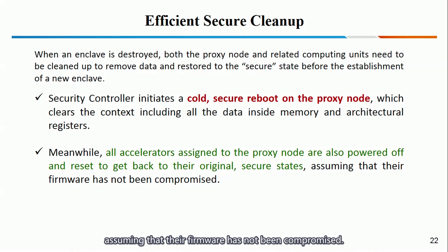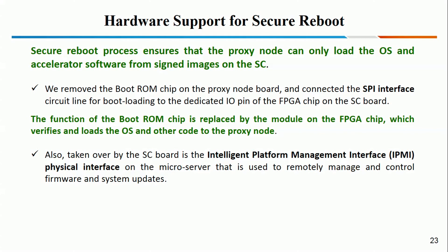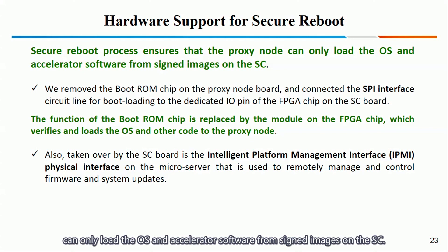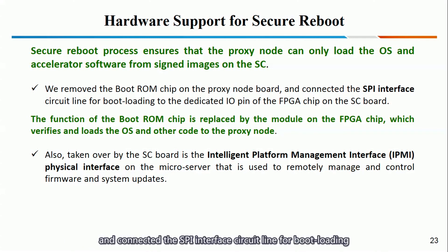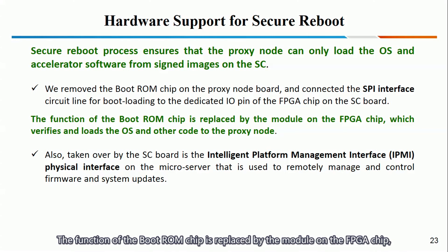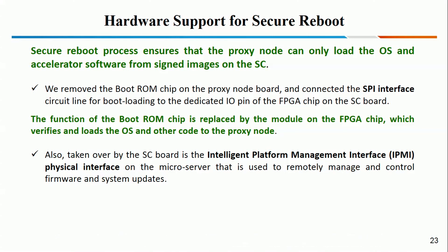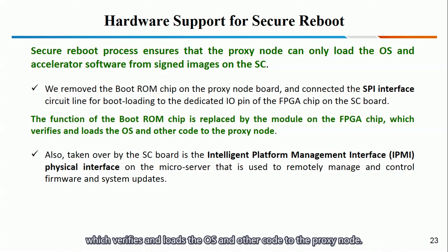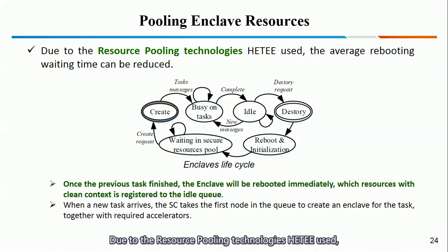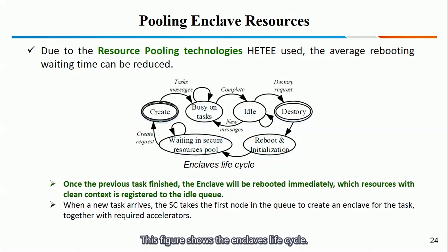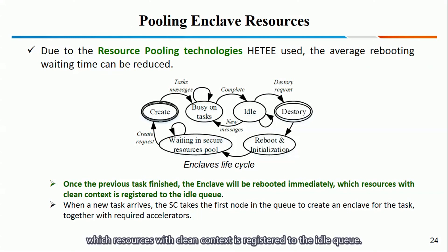Assuming the firmware has not been compromised, the secure reboot process ensures that the proxy node can only load the OS and accelerator software from a signed image. We removed the boot ROM chip on the proxy node board and connected the SPI interface circuit line for bootloading to the dedicated IO pin of the FPGA chip on the SC board. The function of the boot ROM chip is replaced by the logic of the FPGA chip, which verifies and loads the OS and other code to the proxy node. Due to resource pooling technologies, the average number of reboots can be reduced. This figure shows the enclave's lifecycle: once the previous task finishes, the enclave will be rebooted immediately, with a clean context registered to the idle queue.